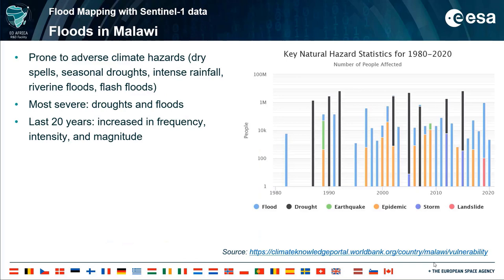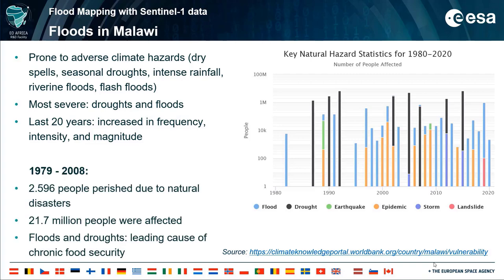Malawi is particularly prone to adverse climate hazards that include dry spells, seasonal droughts, intense rainfall, riverine floods, and flash floods. Droughts and floods — the most severe of these hazards — have increased in frequency, intensity, and magnitude over the past 20 years, with consequences on food and water security, water quality, energy resources, and sustainable livelihoods of rural communities. From 1979 to 2008, 2,596 people perished due to natural disasters and nearly another 21.7 million people were affected. In general, floods and droughts are the leading cause of chronic food insecurity, which is endemic in many parts of the country.